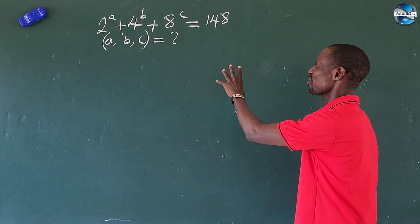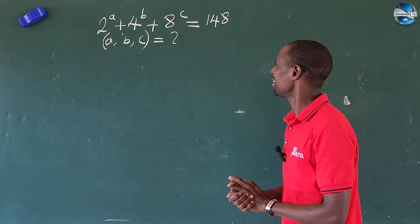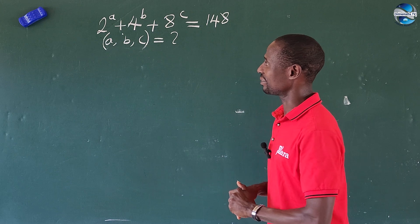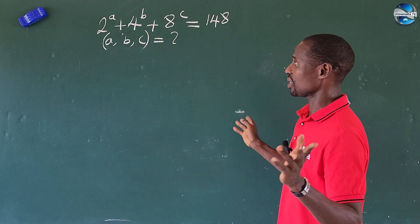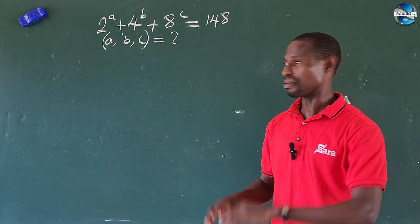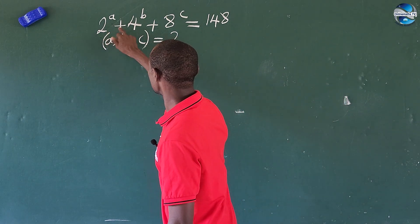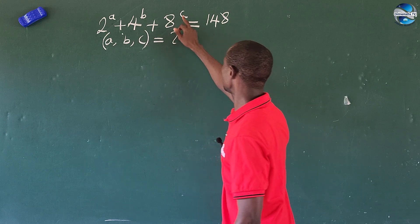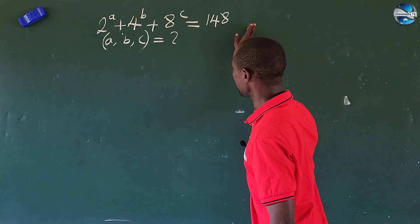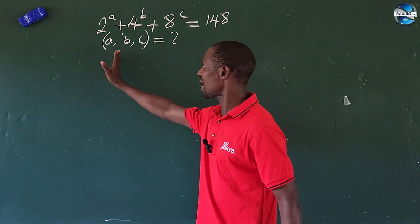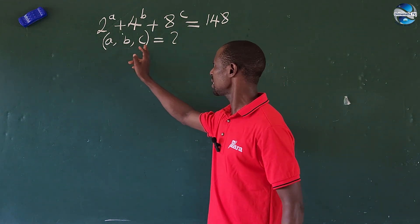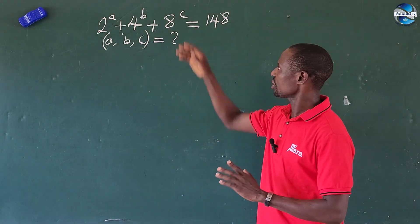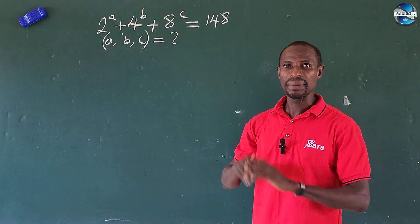Here we have a question before us — a very simple exponential equation. The question reads: 2 to the power of A plus 4 to the power of B plus 8 to the power of C equals 148. What is the value of A, B, C that satisfies this equation when plugged in?